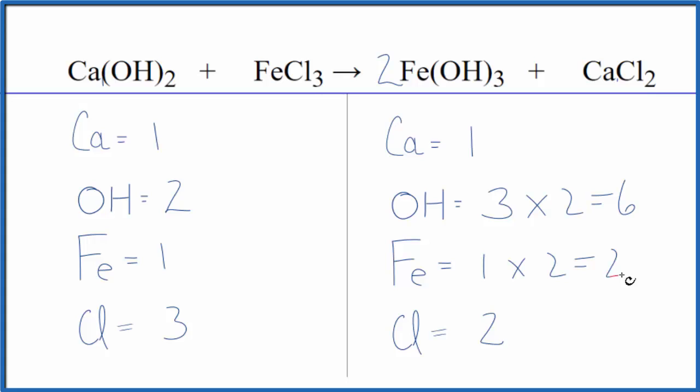Two hydroxides times three, that gives me six, those are balanced. And then one times three, that'll give me three calcium atoms.